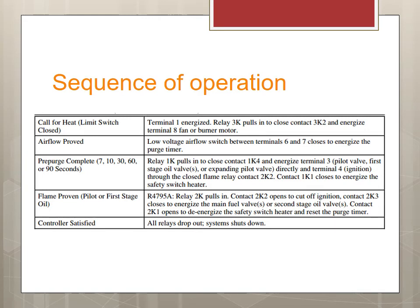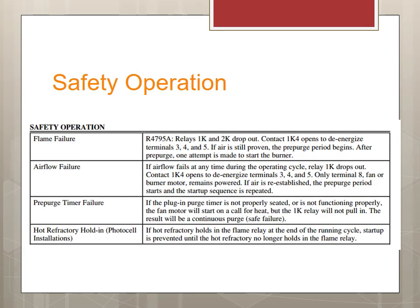Here is the sequence of operation showing what happens when a call for heat occurs — the terminal operations are listed one by one from the manual. This is a good way to troubleshoot the control. In case of flame failure it tells you which relay disconnected; for airflow failure it shows what will happen, and if a previous failure occurred, the chart indicates the causes.